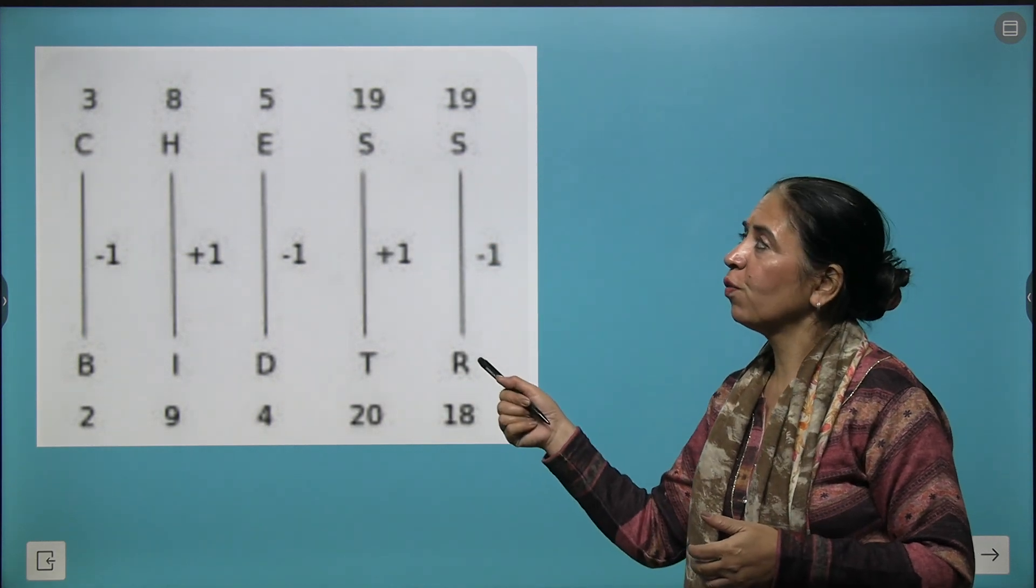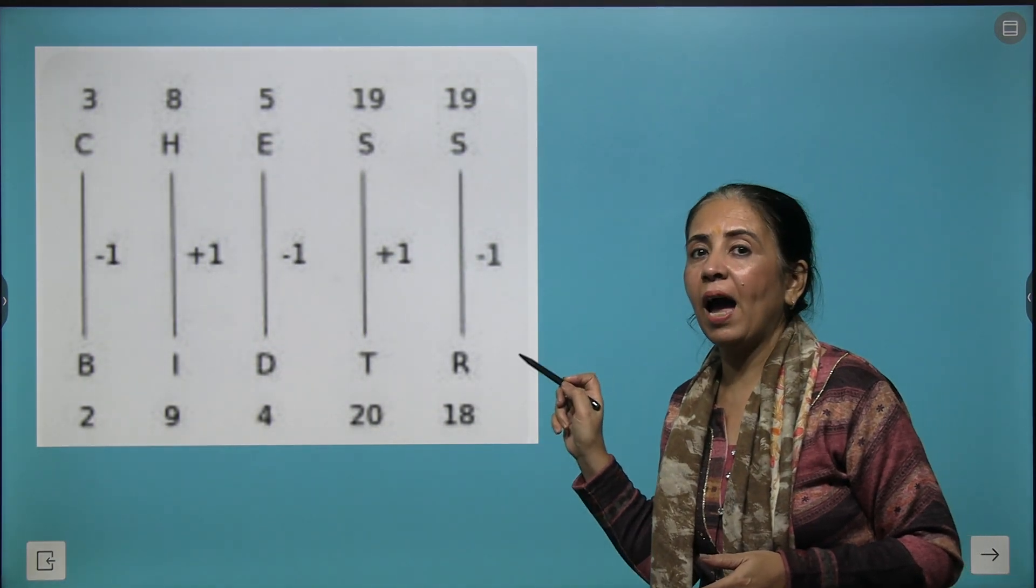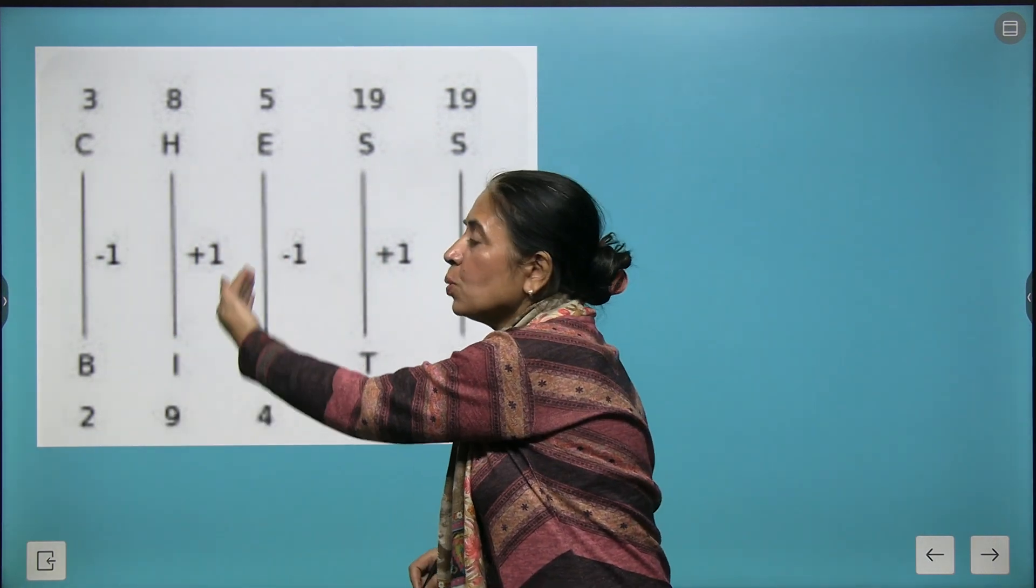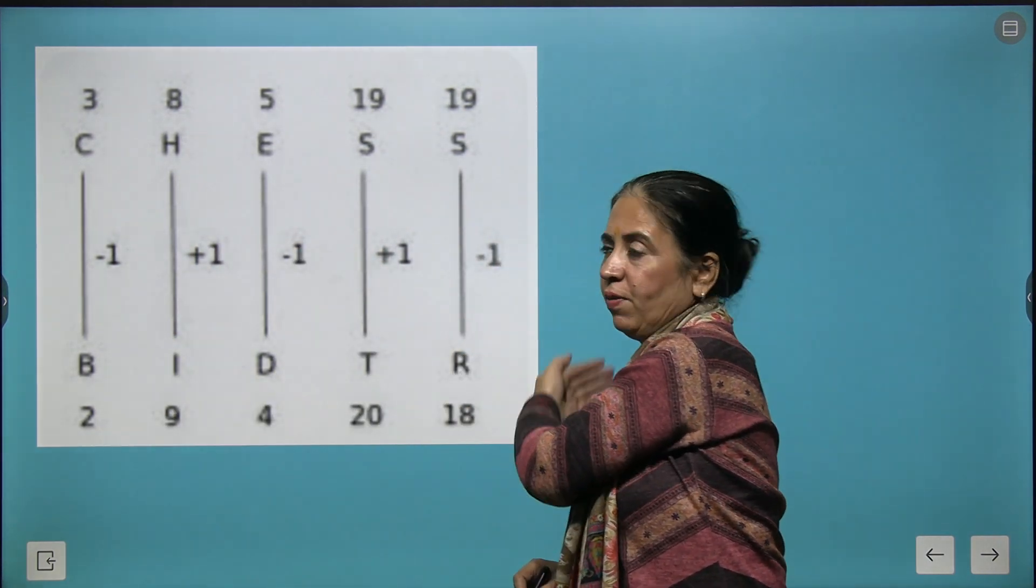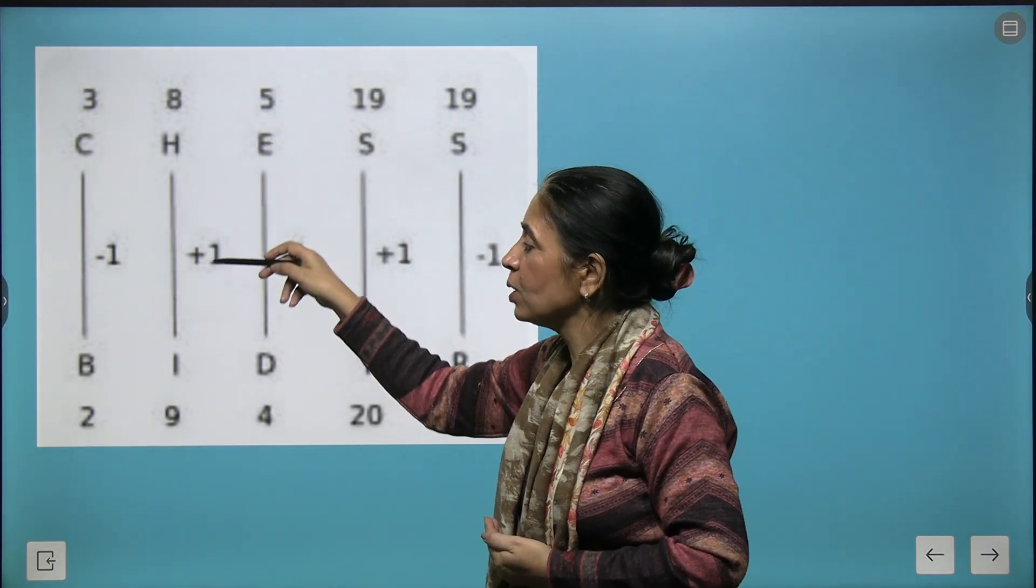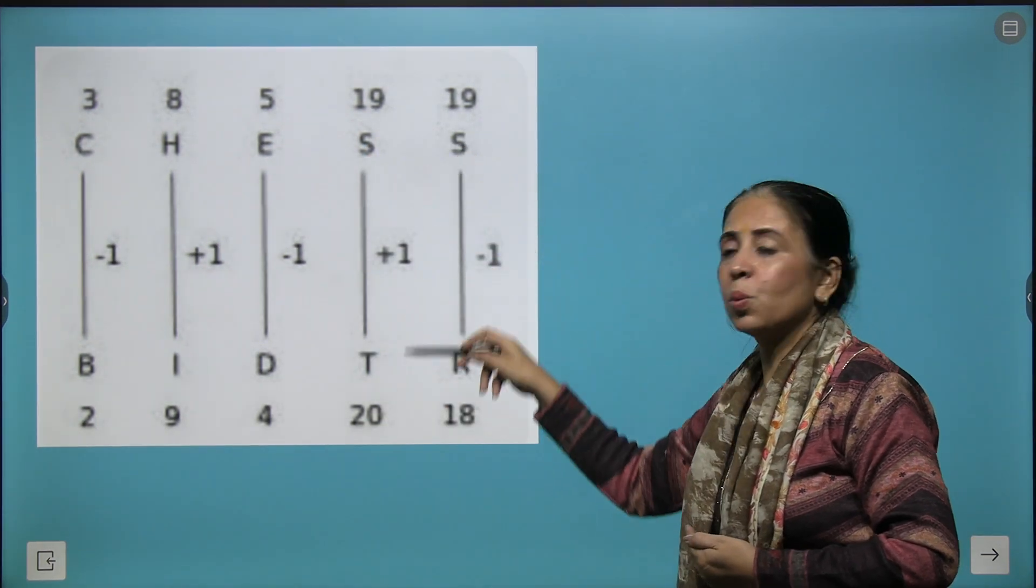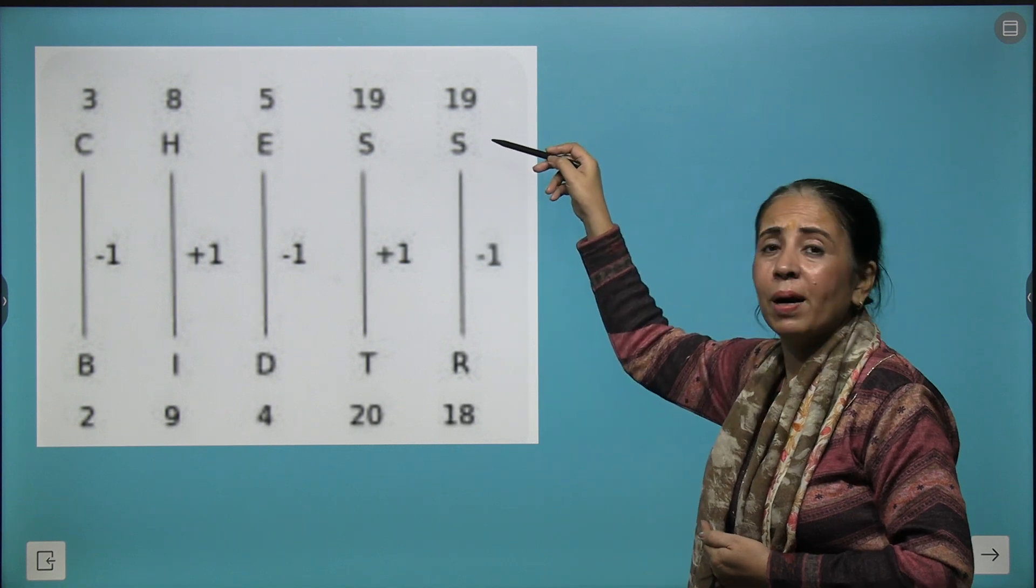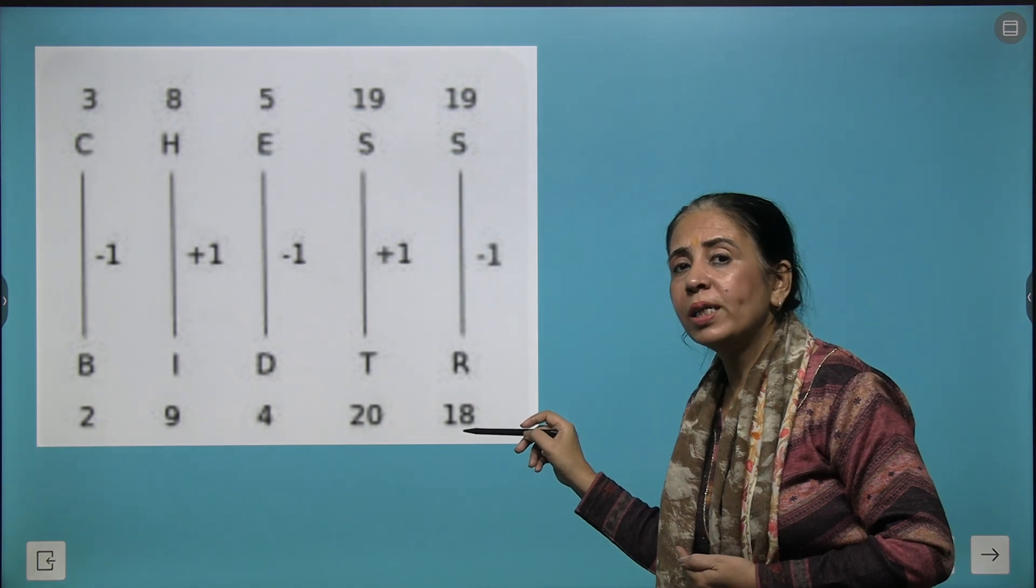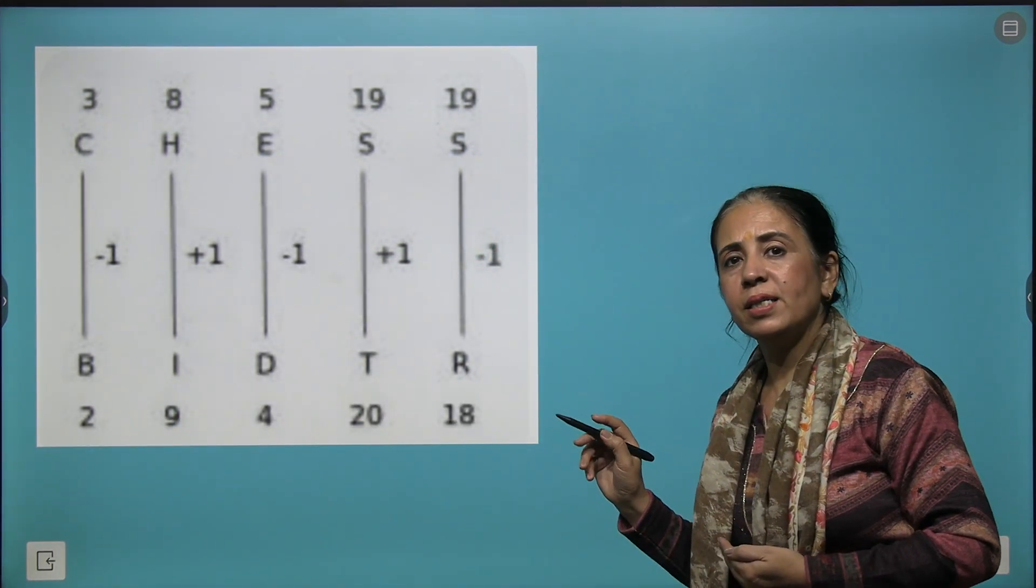Here we have another pattern of question. The word CHESS is written, and we have changed every alphabet with a pattern of minus 1, plus 1 alternatively. So C turns to minus 1, that becomes B. H plus 1 is I. E minus 1 is D. Then S plus 1 is T. Next time again we have S, but this time it follows minus 1, so it turns to R. Your code becomes BIDTR.